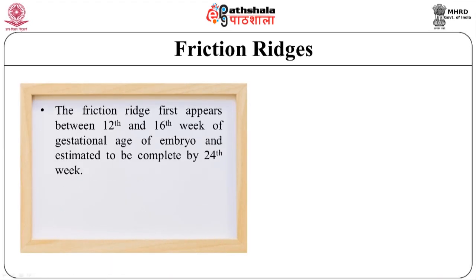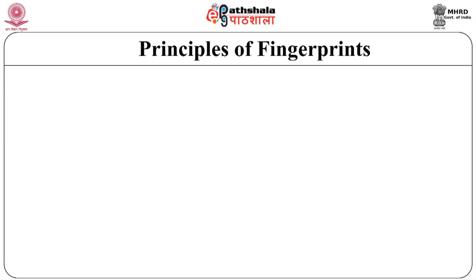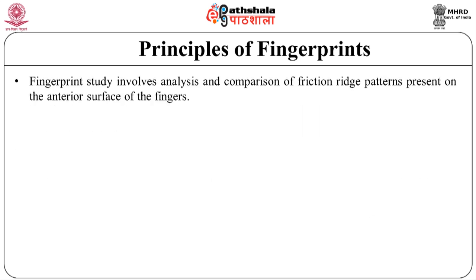Now let's talk about the morphogenesis of friction ridges. Friction ridges first appear between the 12th and 16th week of gestational age of the embryo and are estimated to be completed by the 24th week. The major development of friction ridges occurs between 11 and 20 weeks of estimated gestational age.